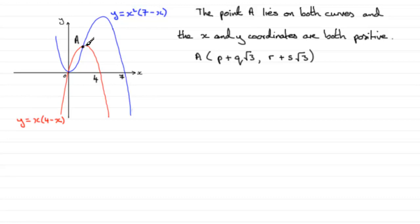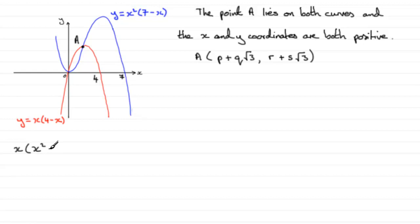Do you remember, in the previous part, when we were trying to find the equation satisfied by x at the point of intersection of the two curves? We showed that that equation was, in fact, x bracket x squared minus 8x plus 4 equals 0.